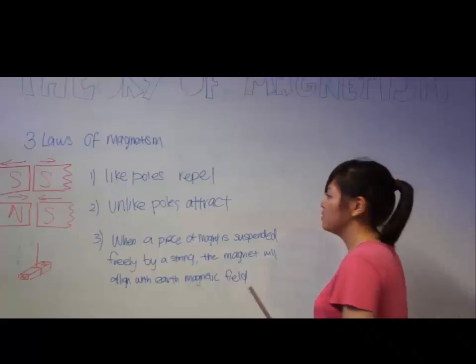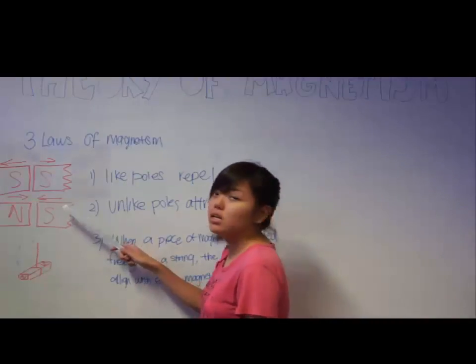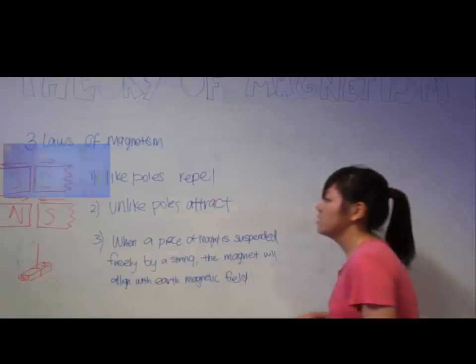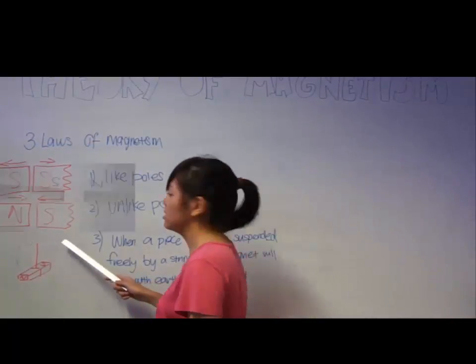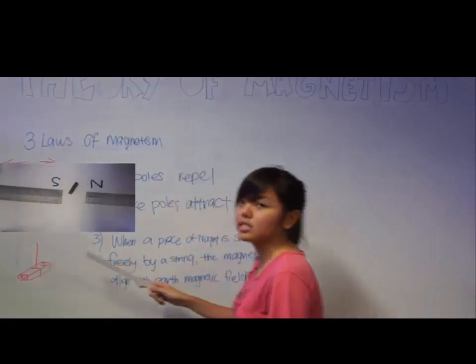Firstly, like poles repel. As shown in the diagram, there are two south poles repelling. Next, unlike poles attract. As you can see, one is the north pole and one is the south pole, and they are attracting each other.